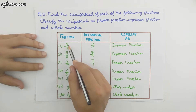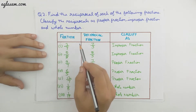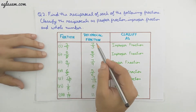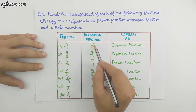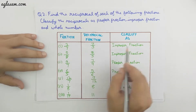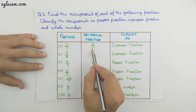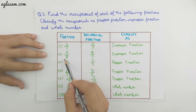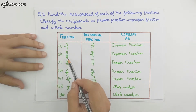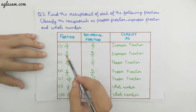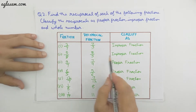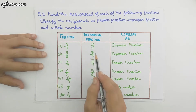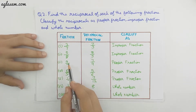First, the reciprocal of 3/7 is 7/3, which is an improper fraction because the numerator is greater than the denominator. Second, the reciprocal of 5/8 is 8/5, which is again an improper fraction because 8 is greater than 5.